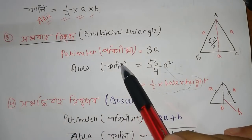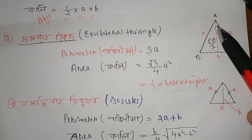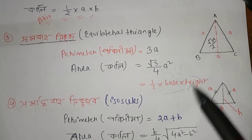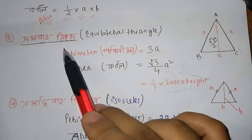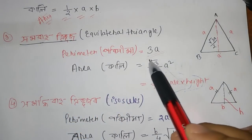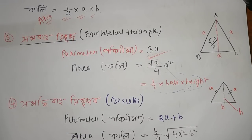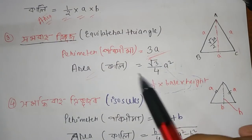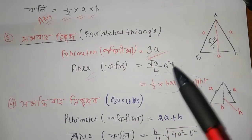For the equilateral triangle, we add a plus a plus a plus a. Homo-bahu means all sides equal, so perimeter is 3a. The area of an equilateral triangle is root 3 by 4 times a squared. The formula is root 3 divided by 4 times a squared.